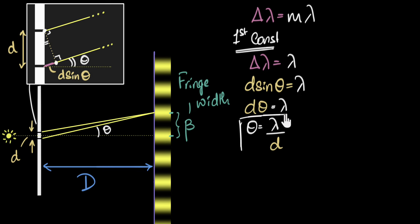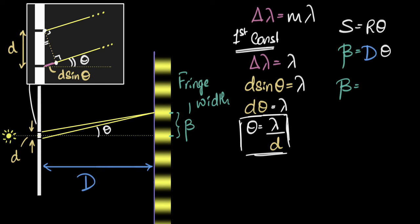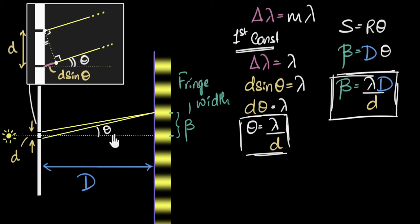Now we've found the angle, but how do we calculate the actual distance beta? Because the angle is very small, we can use the arc-angle formula. The arc S equals R times theta, where our arc is beta and the radius is capital D. Substituting theta, we get beta equals lambda divided by d times capital D, or beta equals lambda D over d. If you had used trigonometry with tan theta — which also approximates to theta for small angles — you would get exactly the same result.